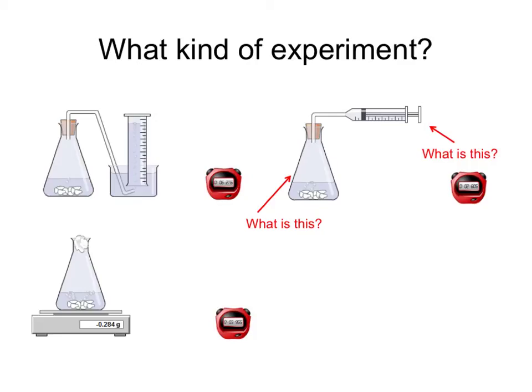Looking at some of those experimental setups again, this piece of equipment here you have to be able to identify. It's a conical flask. And this piece of equipment here, again you have to be able to identify this. This is called a gas syringe.